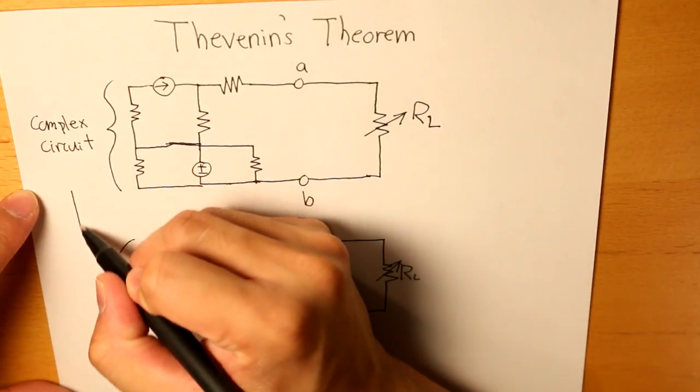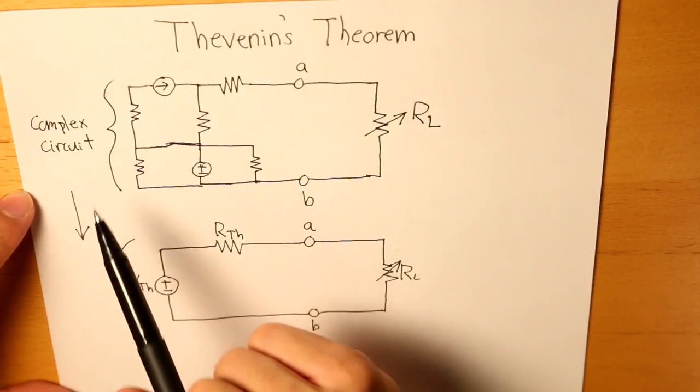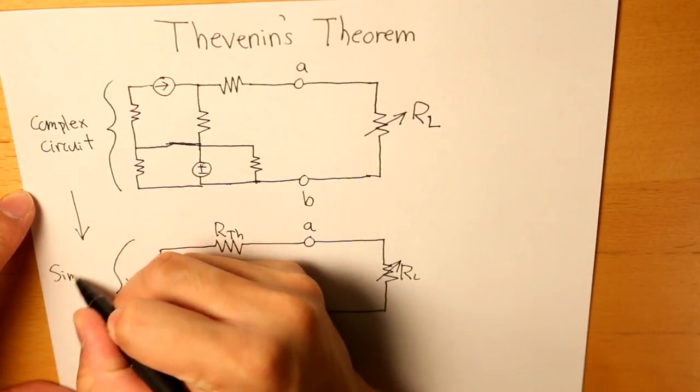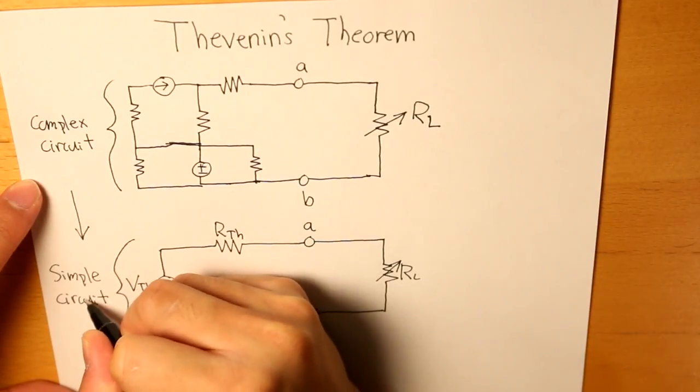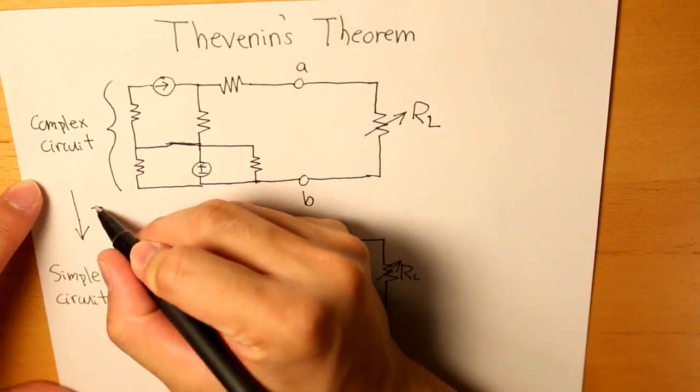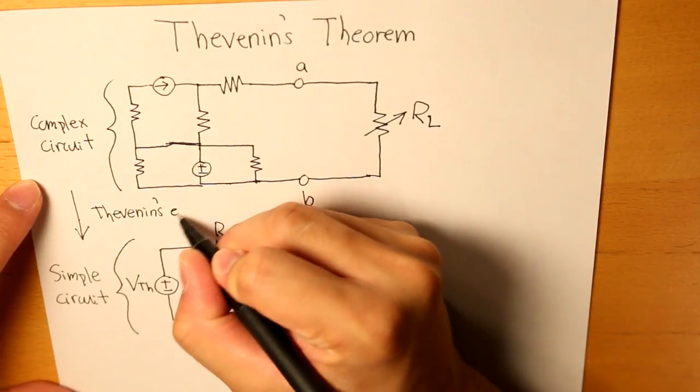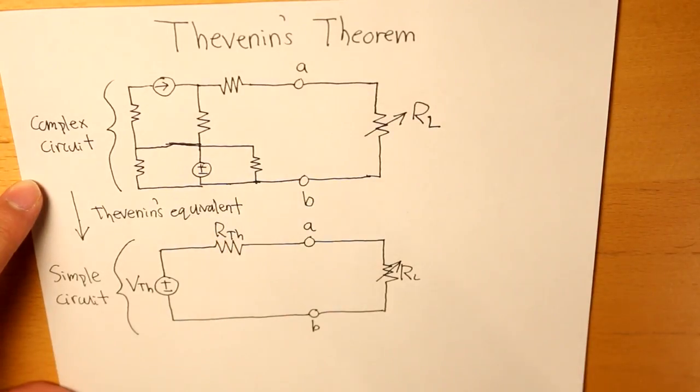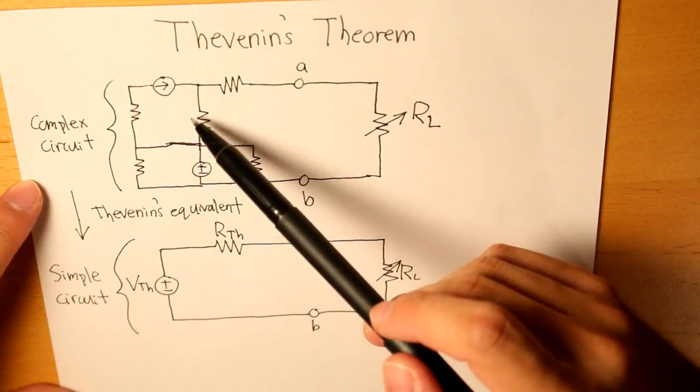So we are transitioning from complex circuit to a simple circuit using the Thevenin's equivalent. And that's pretty simple, so we're changing from this to this.